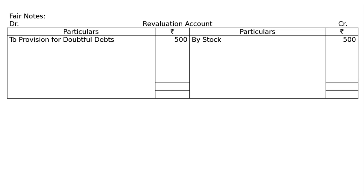Next is stock. Stock worth Rs. 8,000 was taken over by Abha and Vinay at book value in their profit-sharing ratio — it has no entry in the revaluation account. The remaining stock is increased by Rs. 500; it is now valued at Rs. 2,500, whereas previously it was Rs. 2,000. So increase in stock is Rs. 500, credited in the revaluation account. Taking over of stock by Abha and Vinay will be credited in the capital accounts.